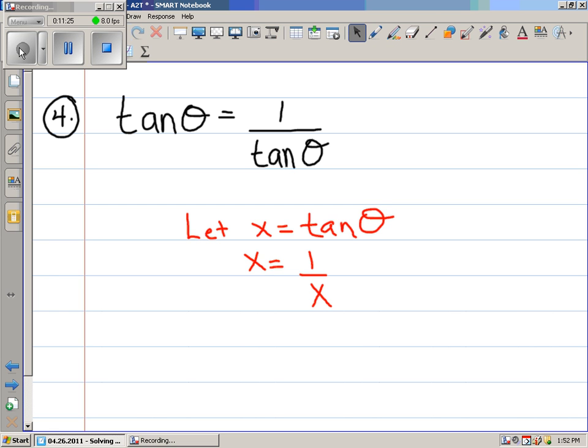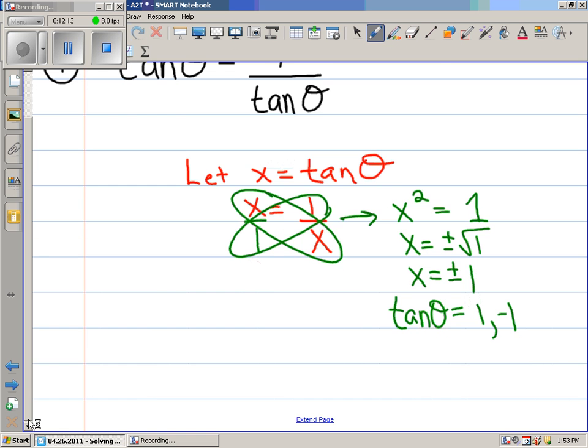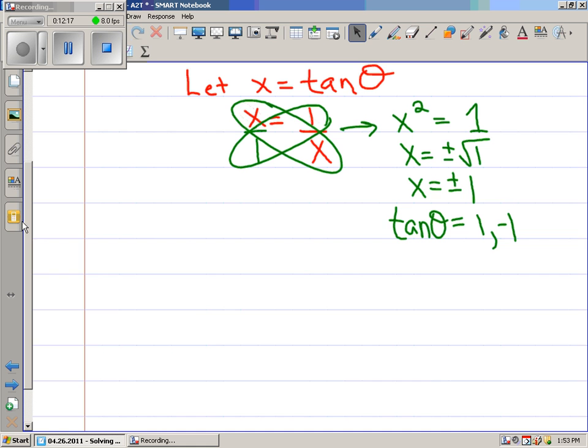You do what every scared ninth grader does on their regents exam. You cross-multiply. You see, look. It even looks like a hug. Oh, it makes you feel better. Right? Or a band-aid. Okay. In any event, when you get done cross-multiplying, you get x squared equals one. What squared is one? What's the other thing? Squared is one. Yeah. There's two answers. Remember that. You take plus or minus the square root of each side, and you get that x is plus or minus one. And now we're going to sub back. The tangent of theta, there are two possible choices for it. There's one, and there's negative one.